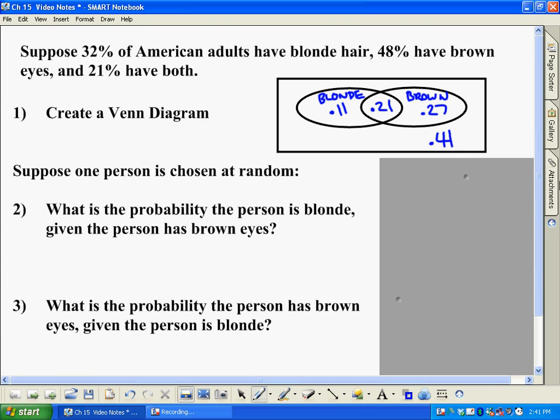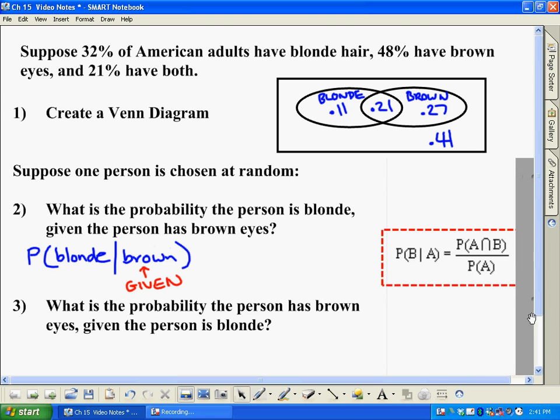So how do we do that? What we do is, we can write it out like this. What is the probability the person is blonde? And in math, what we do is, we use this line right here to symbolize given the person has brown eyes. So what comes second is what we would call the given information, and it narrows things down here. So that is given to us. And that is the part that narrows down the whole field here.